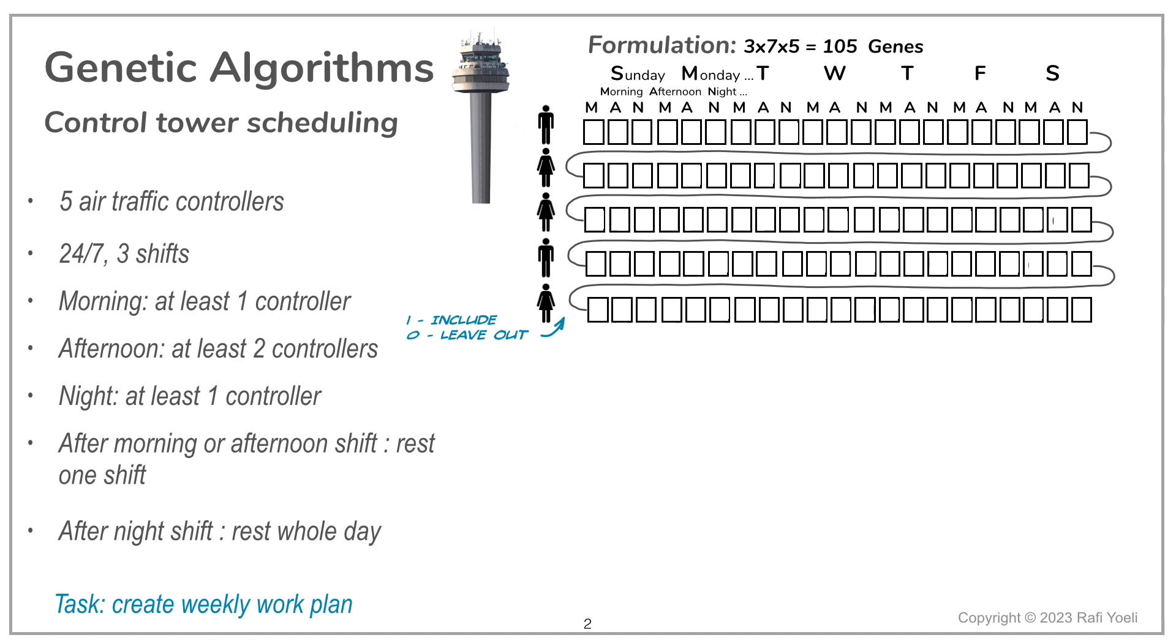The controllers earn a monthly salary, so they're not paid per hour or per shift. The control tower doesn't generate revenues, its costs are fixed, and these have no connection whatsoever to the controller's schedule. So what should our fitness function look like?